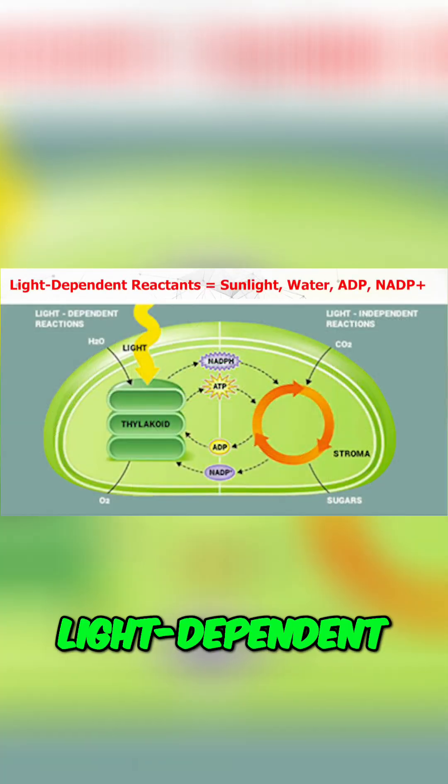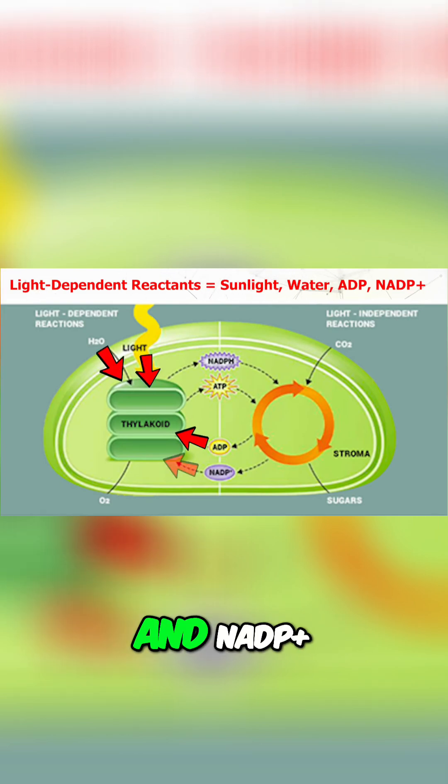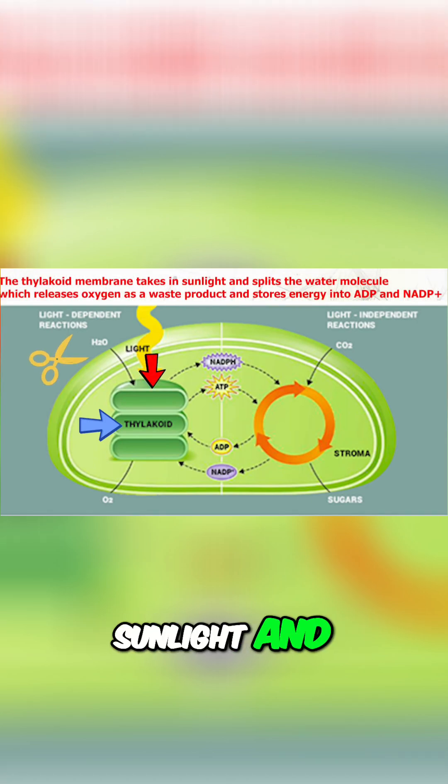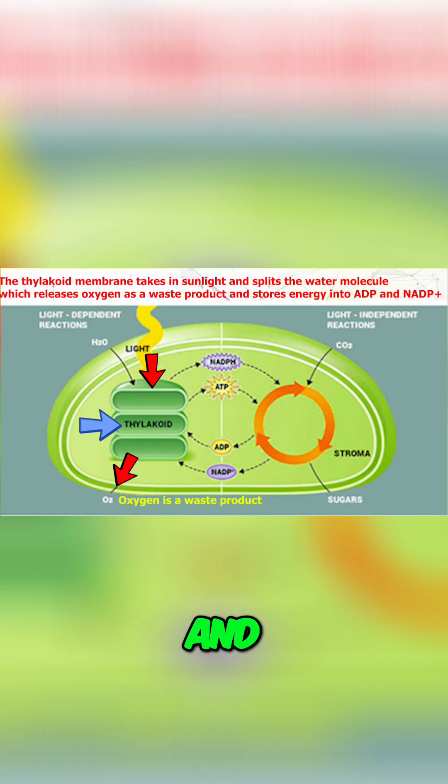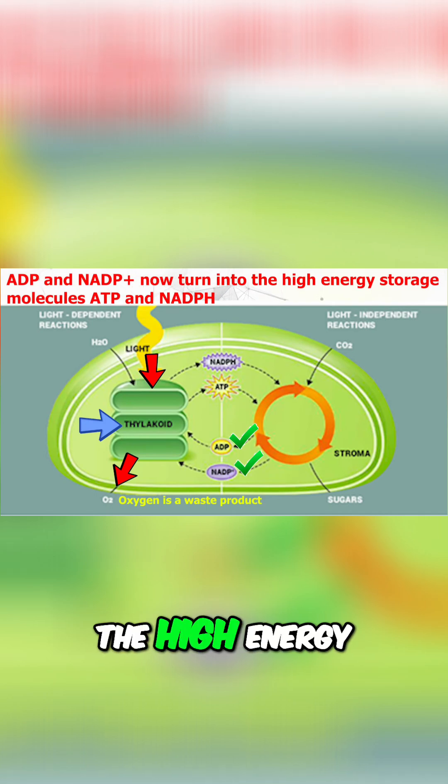Now the reactants for the light-dependent reactions are sunlight, water, ADP, and NADP+. The thylakoid membrane of the chloroplast takes in the energized sunlight and splits the water molecule which releases oxygen as a waste product and stores energy into the ADP and NADP+, turning them into the high energy storage molecules ATP and NADPH.